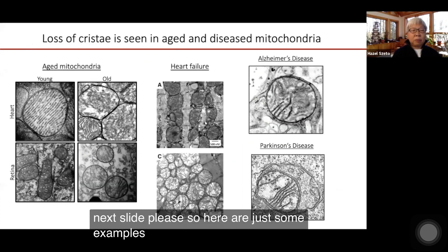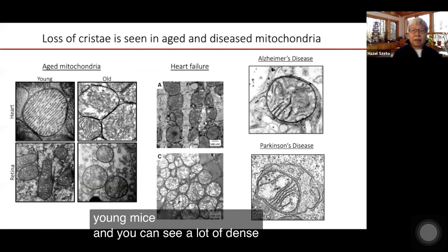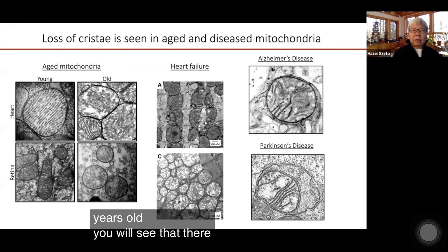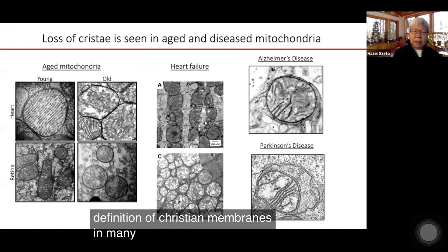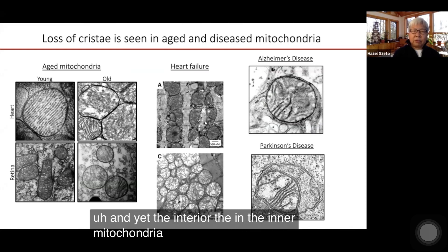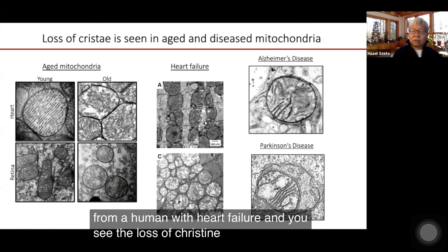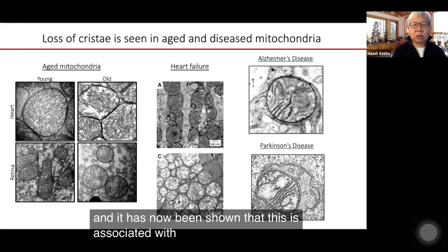Here are just some examples to show how cristae membranes can be lost in aging. Transmission EM images taken from young mice — cardiac and retina mitochondria — show a lot of dense cristae membranes. However, when mice get to be about two years old, there is no clear definition of cristae membranes in many of the mitochondria, though the inner mitochondrial membrane remains intact. The same is seen in heart failure — cardiac mitochondria from a human with heart failure show loss of cristae membrane, and this has been associated with loss of cardiolipin content.